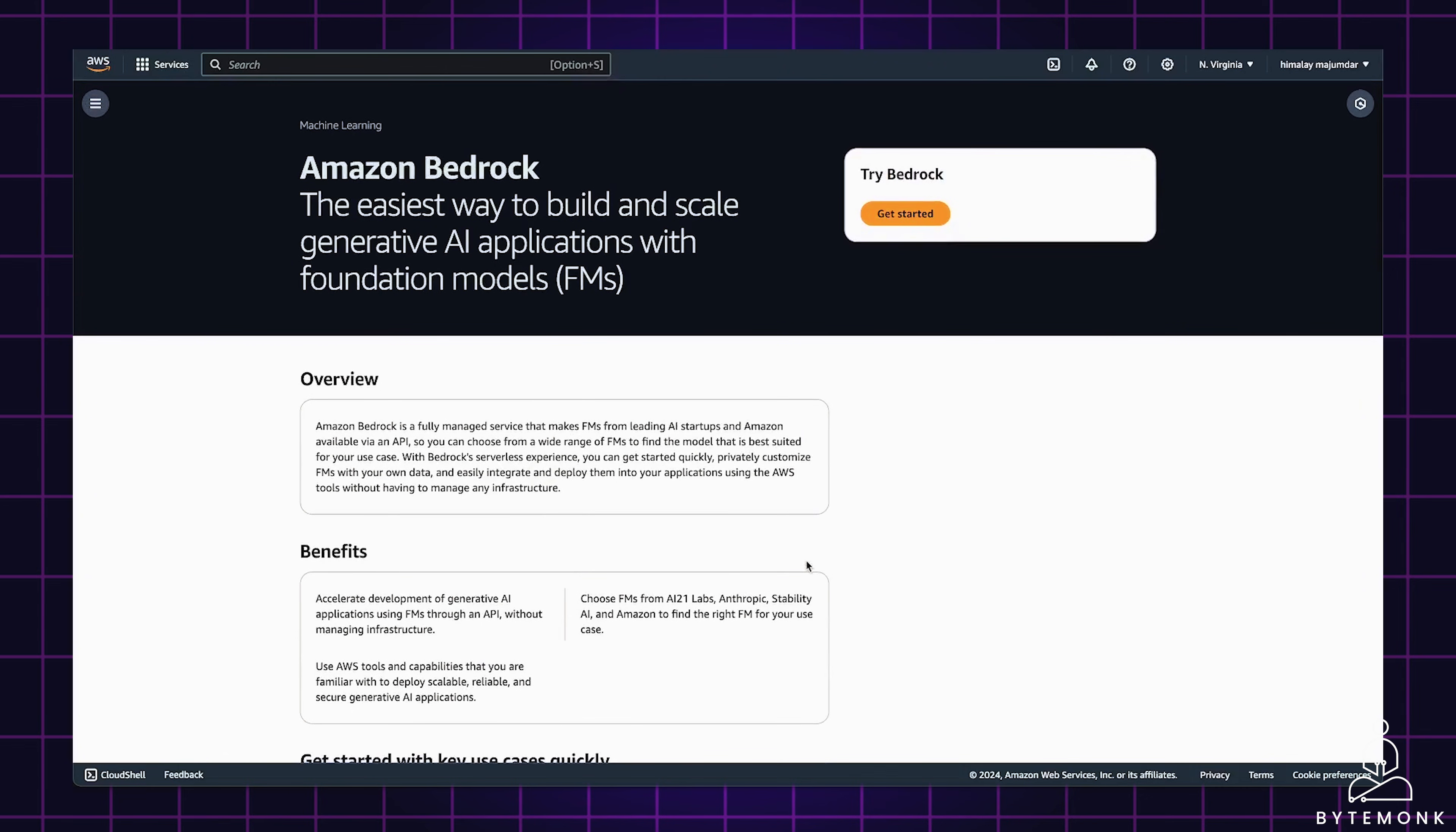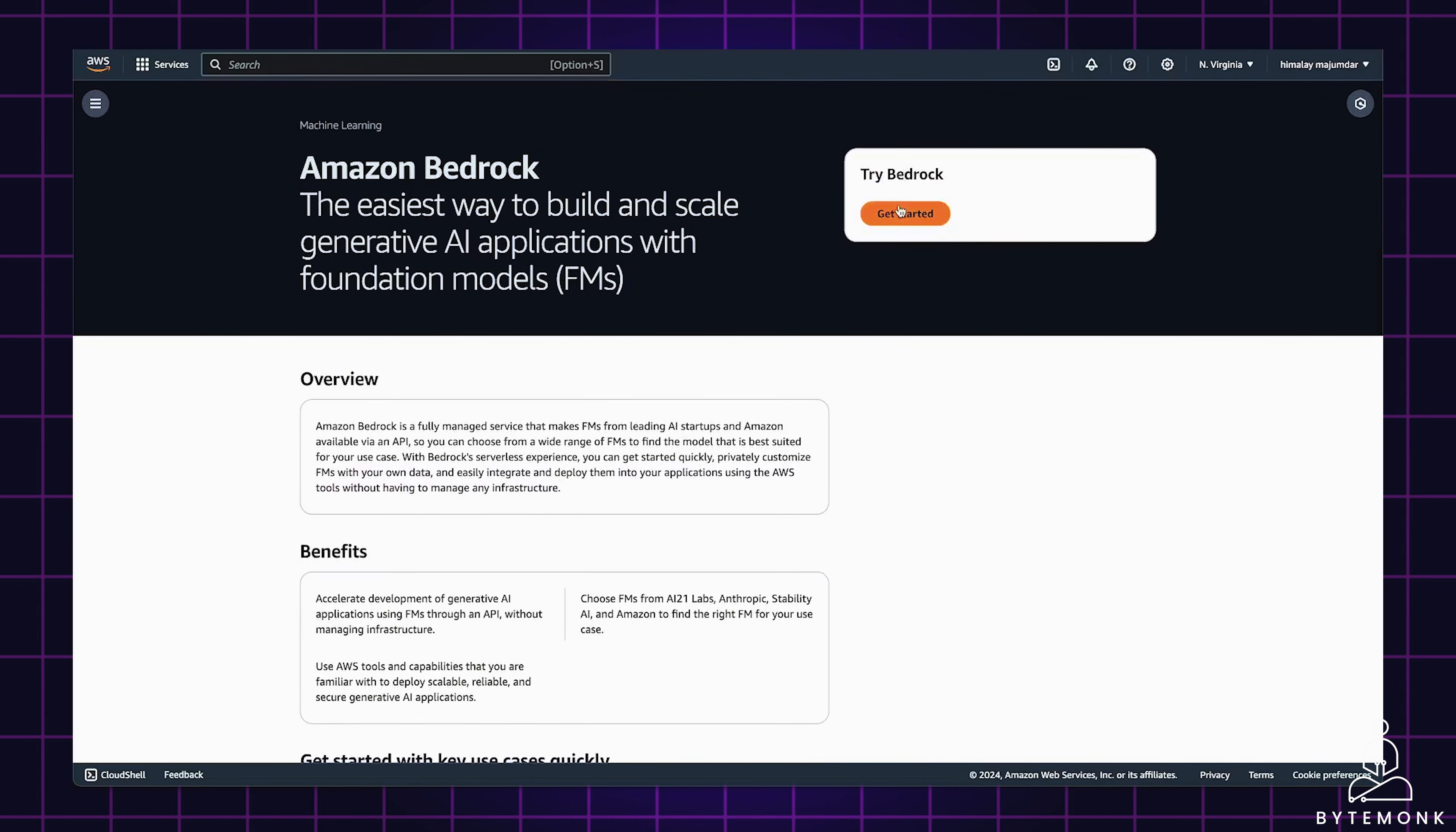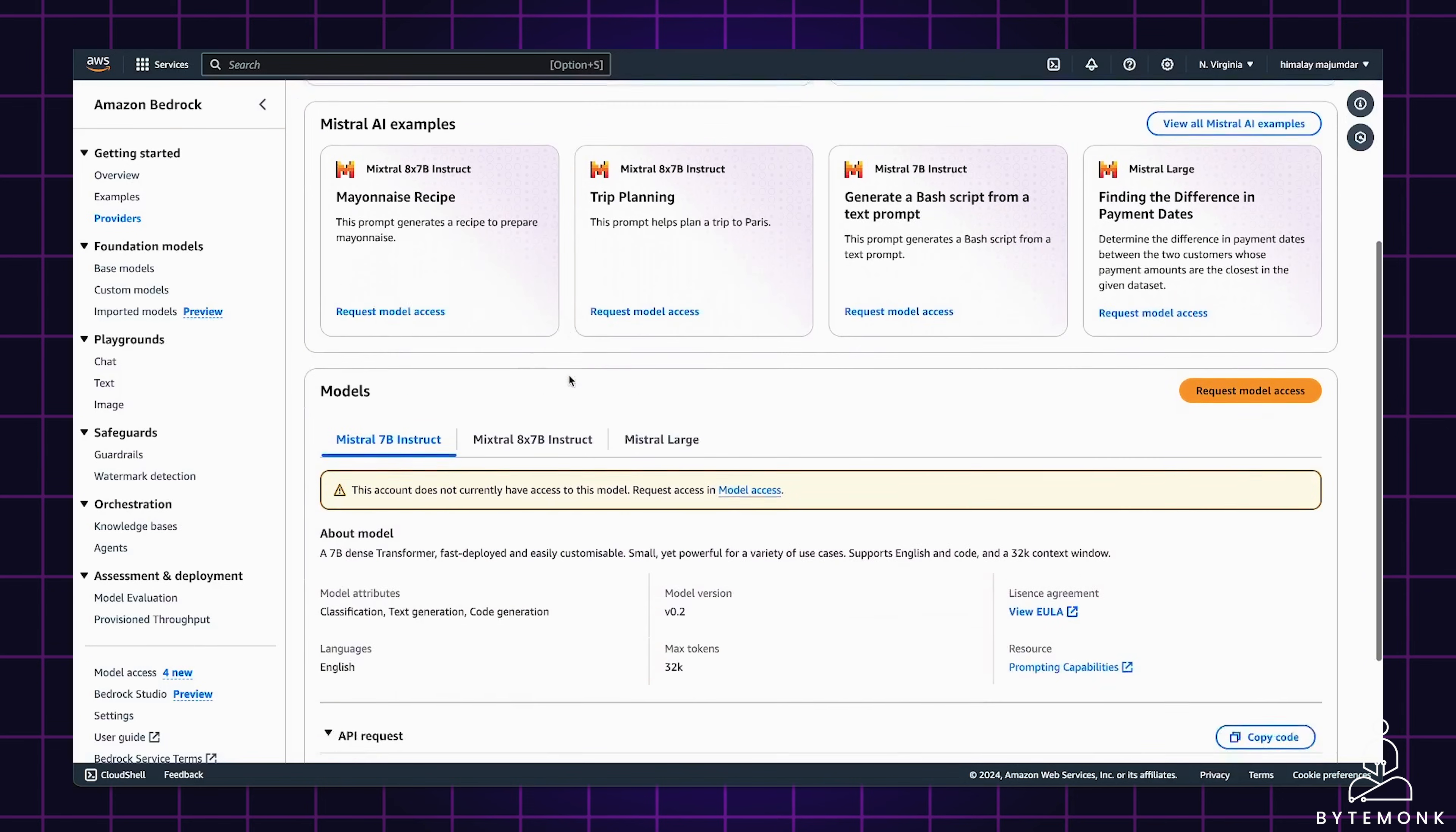Amazon Bedrock is a fully managed service that makes FMs from leading AI startups and Amazon available via an API. So you can choose from a wide range of FMs to find the model that is best suited for your use case. With Bedrock's serverless experience, you can get started quickly, privately customize FMs with your own data and easily integrate and deploy them to your applications using AWS tools without having to manage any infrastructure.